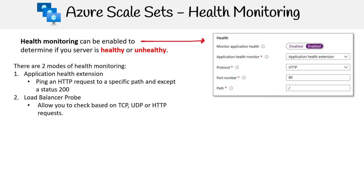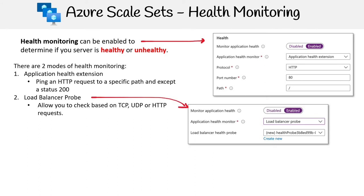The other mode is load balancer probe, which is only going to work if you have an associated load balancer. Here you can check based on TCP, UDP, or HTTP request, so this is a little bit more robust. I generally would recommend using this mode over the first mode, because generally when you have a scale set, you're also going to want to have a load balancer.